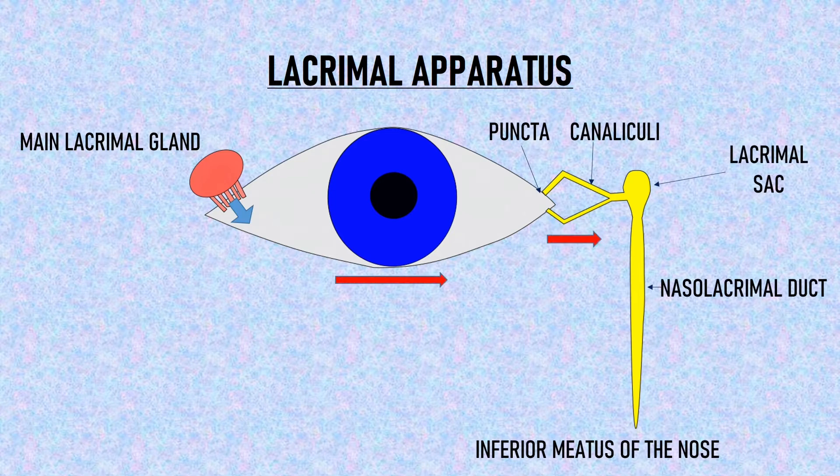Then the tears travel to the lacrimal canaliculi, then to the lacrimal sac, and finally, via the nasolacrimal duct, the tears are drained into the inferior meatus of the nose.